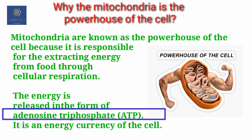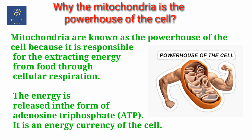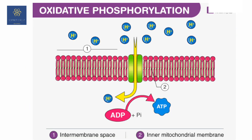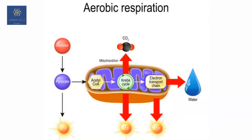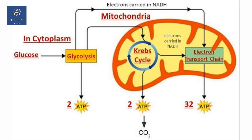Mitochondria are basically the sites of aerobic respiration. They produce cellular energy in the form of ATP, hence they are known as the powerhouse of the cell. More specifically, mitochondria play an important role in oxidative phosphorylation, which generates ATP by utilizing the energy released during the oxidation of food we eat. This ATP is used in different biochemical and physiological processes.